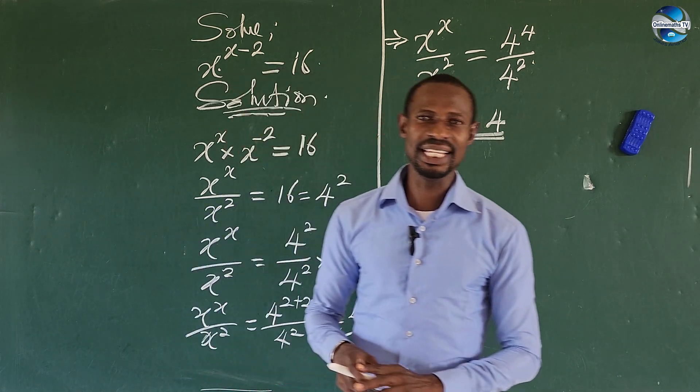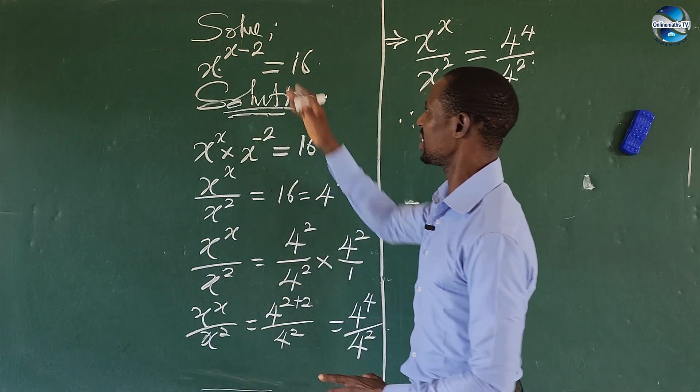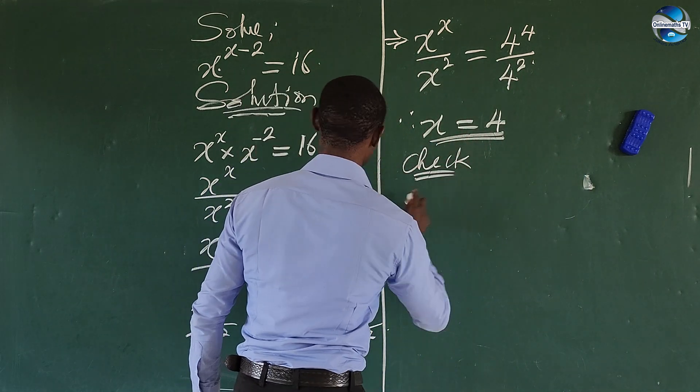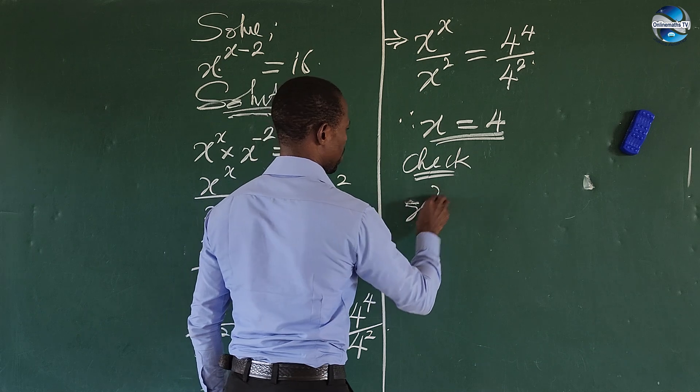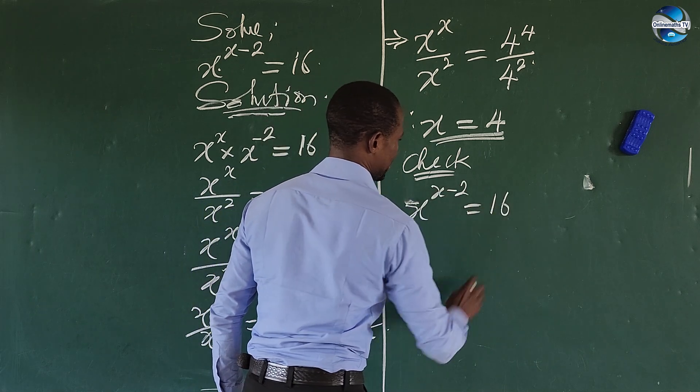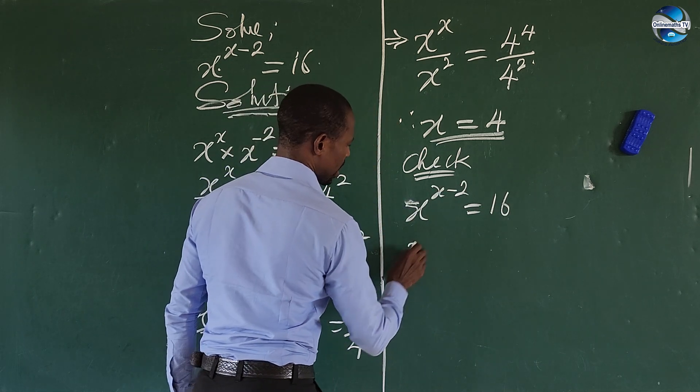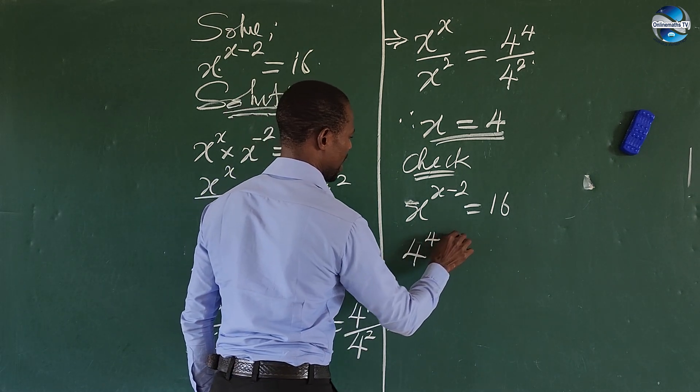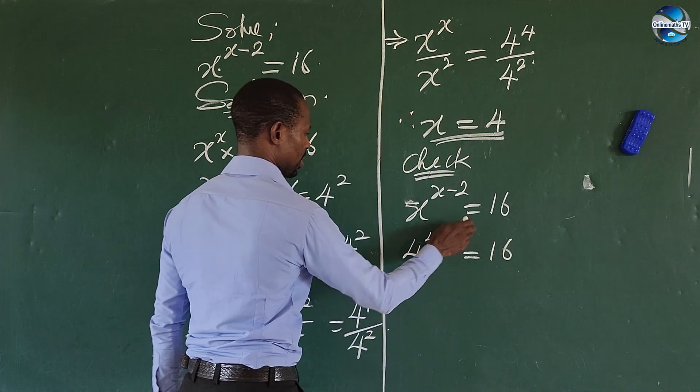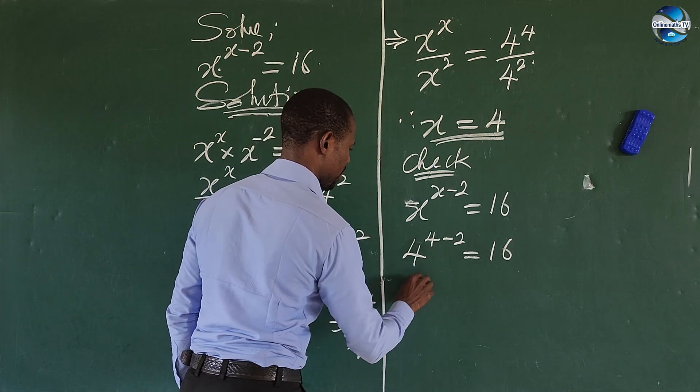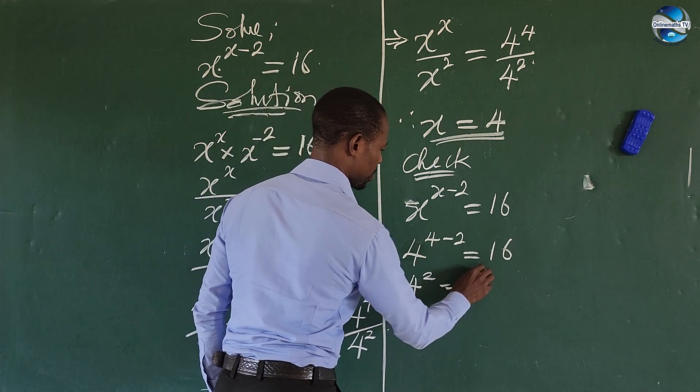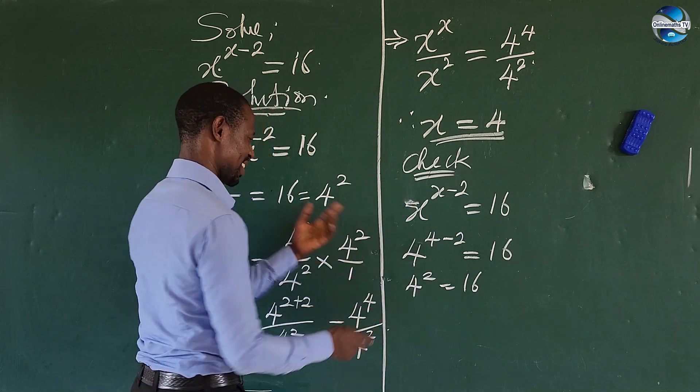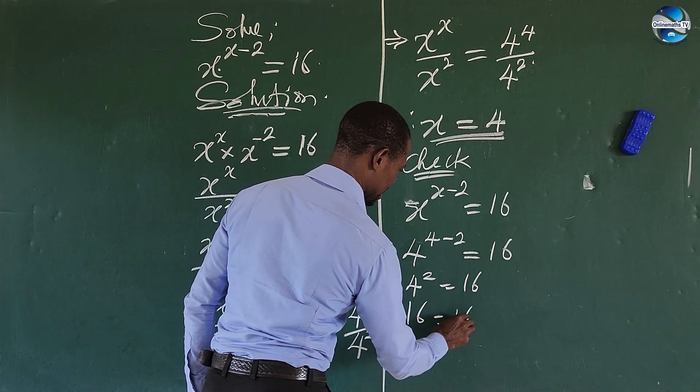But let's do a simple check if this answer actually satisfies the original equation here. So let's do a check. The original equation is x to the power of x minus 2 equals to 16. So let's put in 4 to the power of 4 minus 2, this is equal to 16. So this minus this will give us 2, so we have 4 to the power of 2 is equal to 16. So 4 to the power of 2, we all know from our elementary mathematics, is 16. So we have 16 equal to 16.